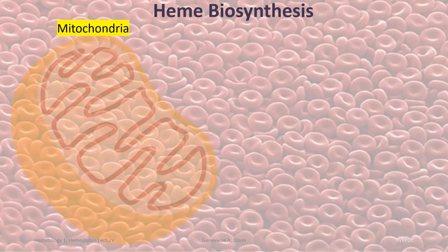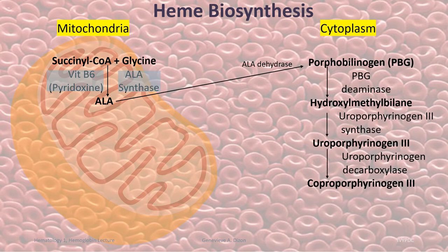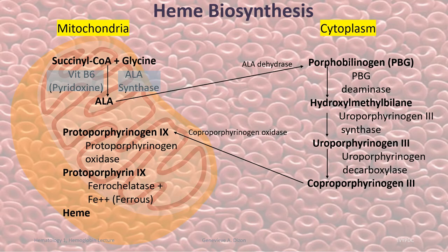Heme biosynthesis happens in the mitochondria and the cytoplasm. It begins by the condensation of succinyl coenzyme A and glycine to form ALA, catalyzed by ALA synthase. Since this is a rate-limiting step, it requires the cofactor vitamin B6. The next four steps happen in the cytoplasm, where ALA undergoes several transformations from porphobilinogen up to coproporphyrinogen 3. The remainder of the steps happen back in the mitochondria. Coproporphyrinogen 3 is converted to protoporphyrinogen 9, catalyzed by coproporphyrinogen oxidase. Protoporphyrinogen 9 is then converted to protoporphyrin by protoporphyrinogen oxidase. Finally, ferrous iron is added to protoporphyrin 9, catalyzed by ferrochelatase, to form the final product: heme.